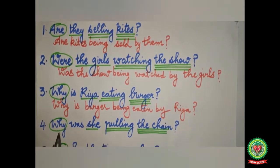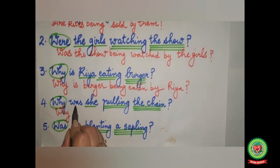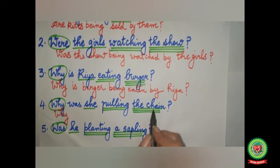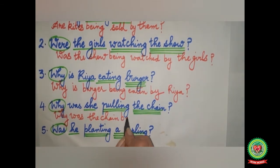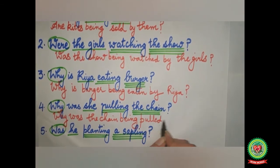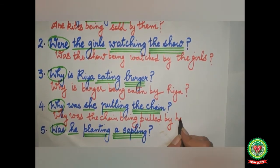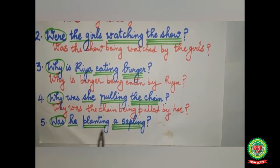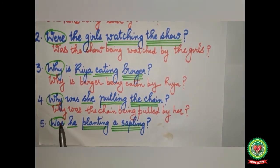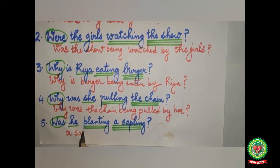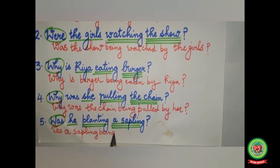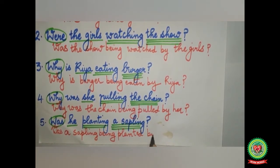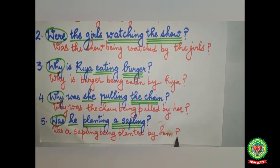Fourth example: 'Why was she pulling the chain?' Here 'why' will remain; we have to add the helping verb after 'why', and the helping verb depends upon the object. 'The chain' will come in the beginning, so 'was' will remain. We add 'being', and 'pulling' will change to its V3 form 'pulled'. The answer becomes: 'Why was the chain being pulled by her?' The last example: 'Was he planting a sapling?' 'Was' is the question word — we have circled it. 'He' is the subject — single underline; 'planting' is the verb — double underline; 'a sapling' is the object — triple underline. 'A sapling' will come in the beginning. 'A sapling' is singular so 'was' will remain. 'Planting' will change to 'planted', and 'he' will change to 'him'. The answer becomes: 'Was a sapling being planted by him?'